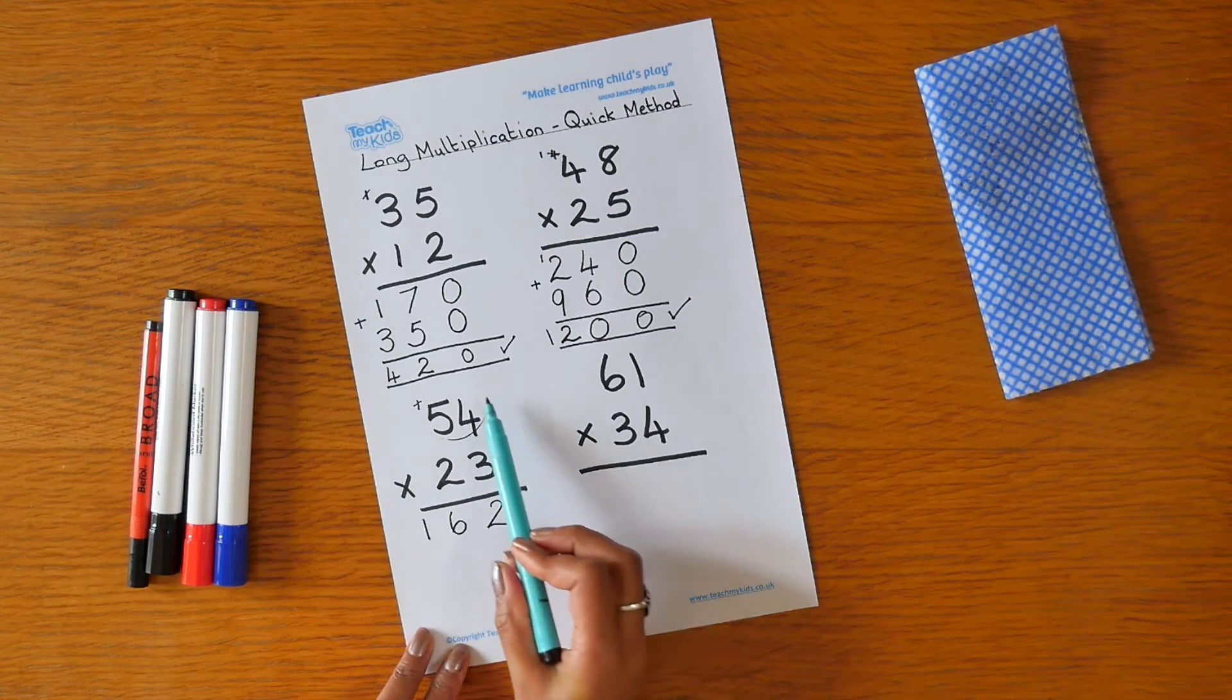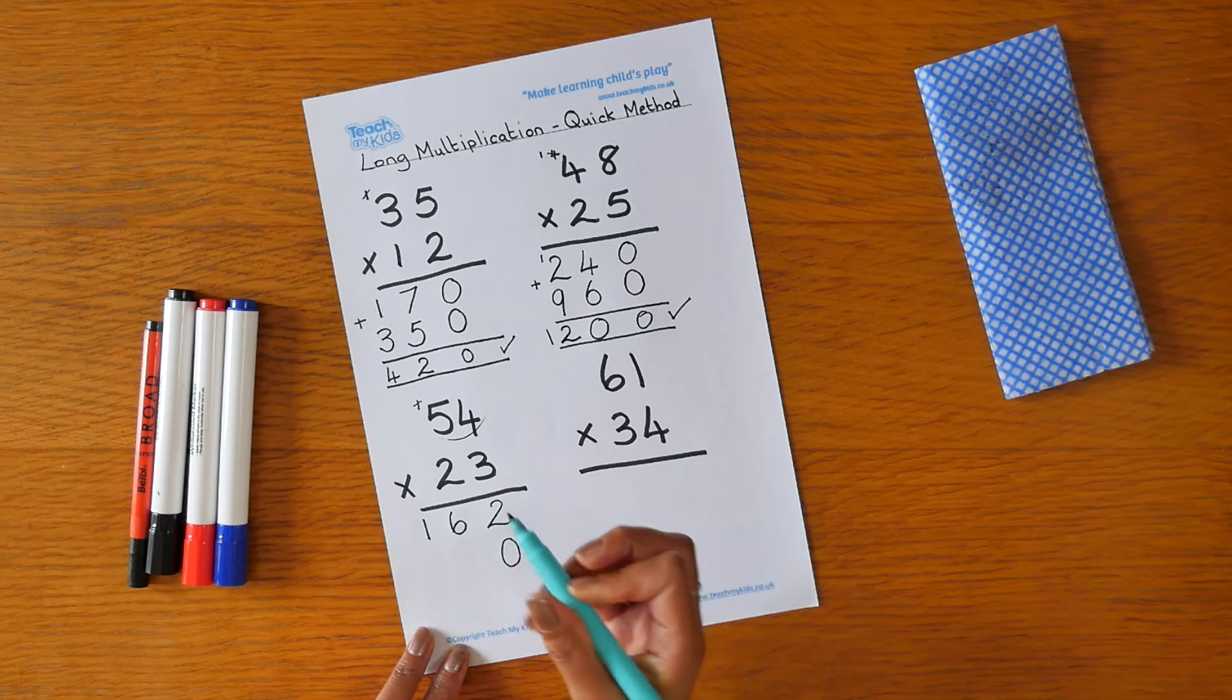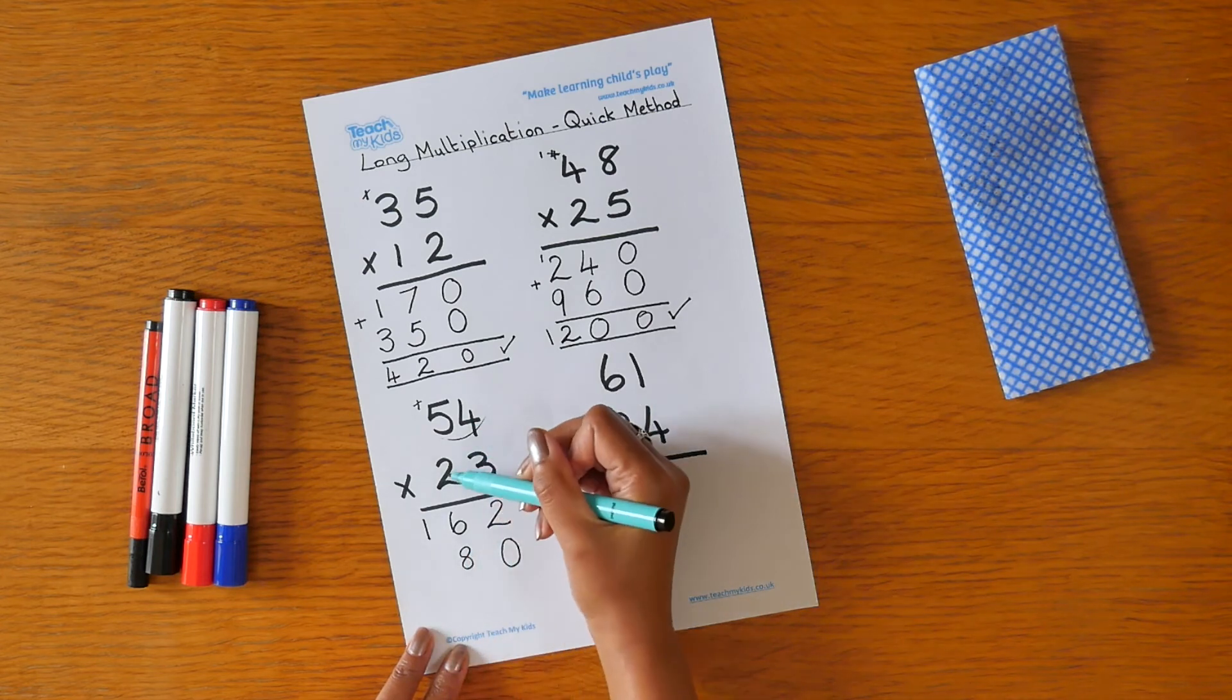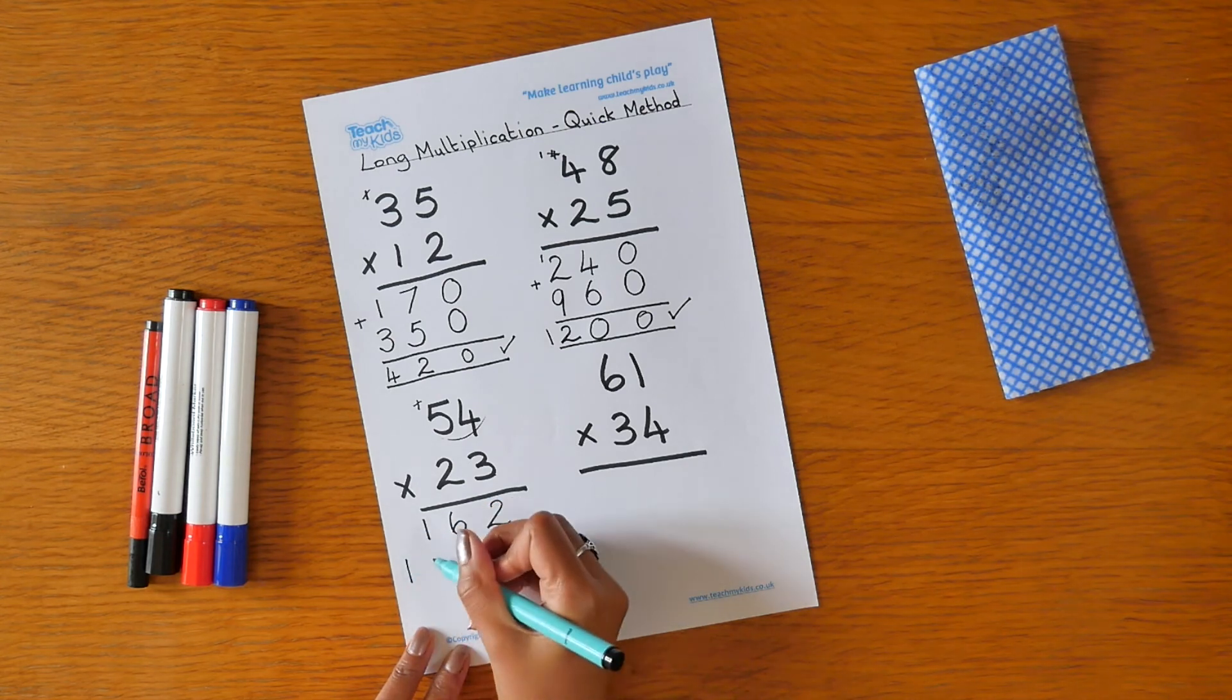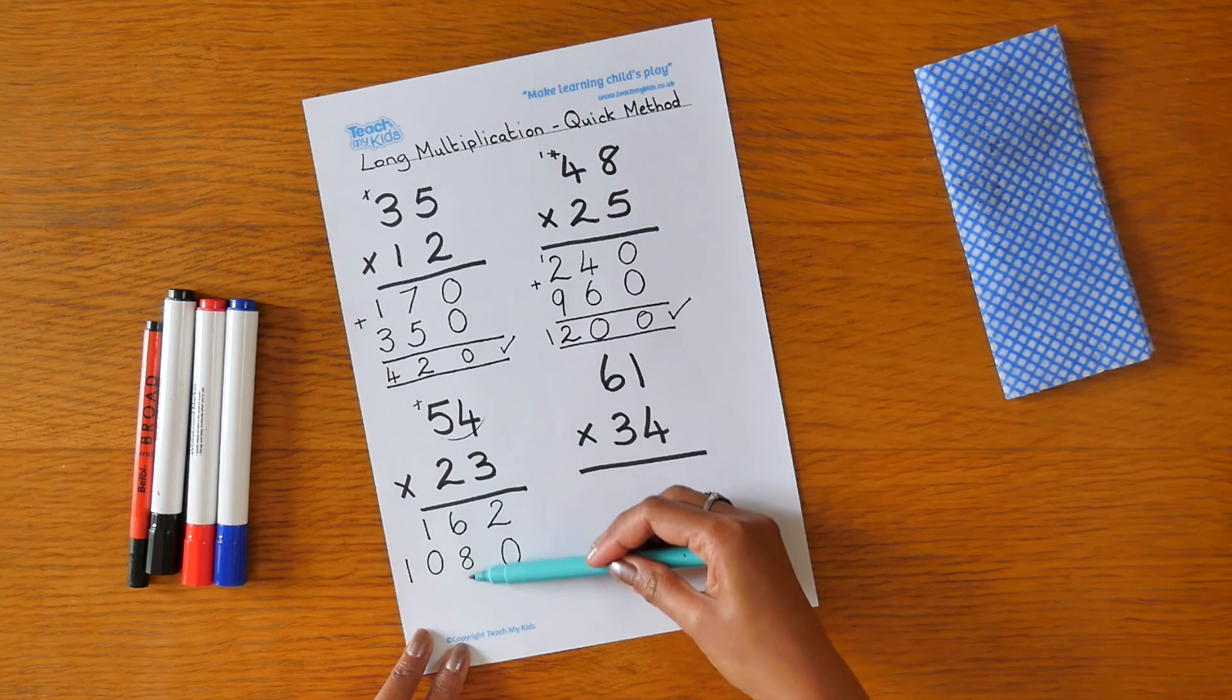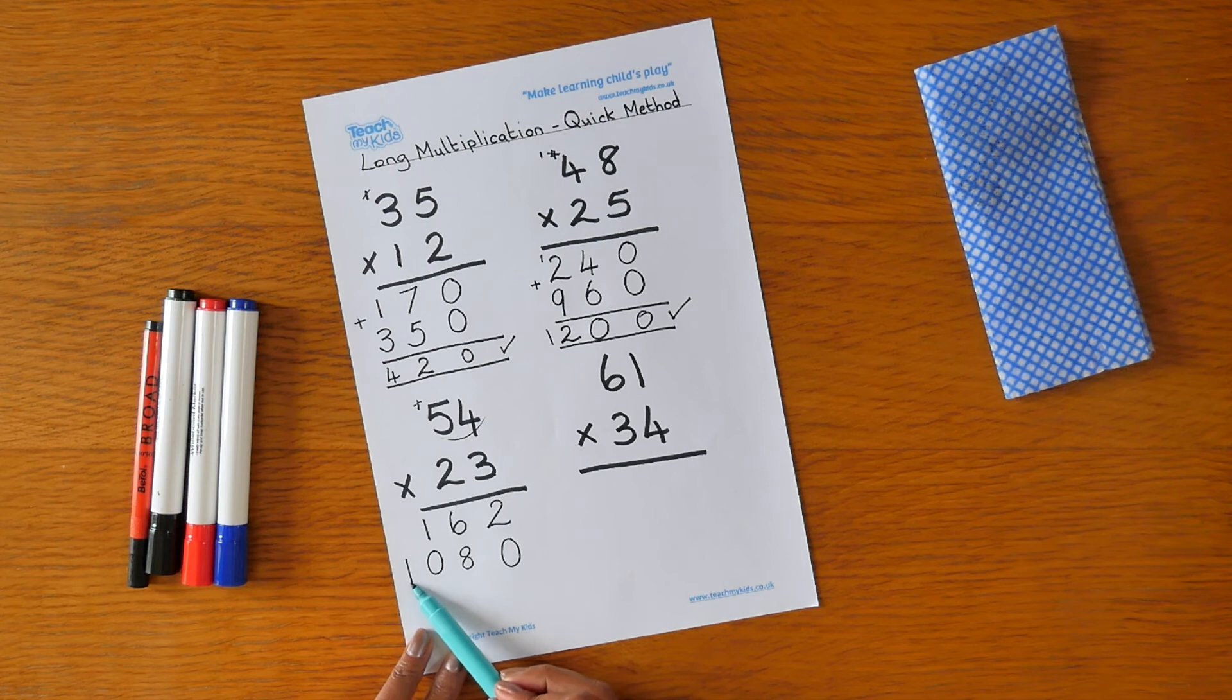We now need to multiply 54 by 20. Because we're multiplying by 20, we put our 0 in first. Now we can multiply by 2. So we go 2 times 4 is 8. 2 times 5 is 10. We need to make sure we put our numbers neatly in the correct columns for our hundreds, tens, and units, and here we've got thousands.